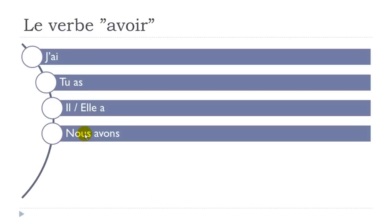Then nous avons. The final -s is not pronounced. So it's A-V-O-N. And we tend to make a little liaison link, as I mentioned in the lesson on être — you link the two words: nous avons, nous avons.